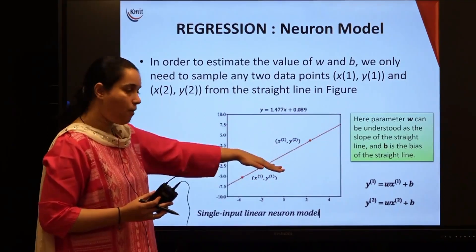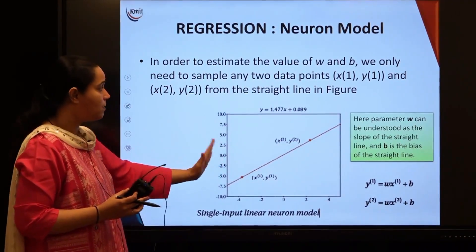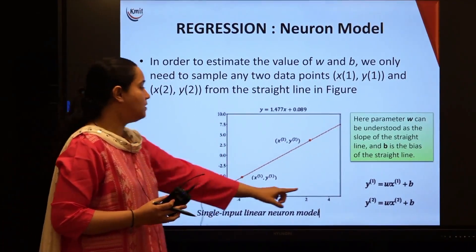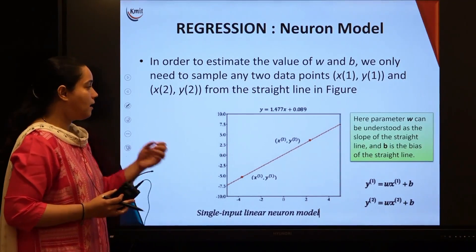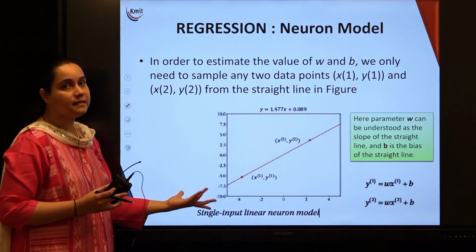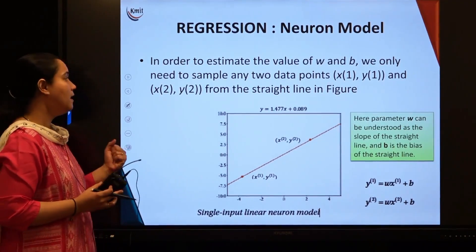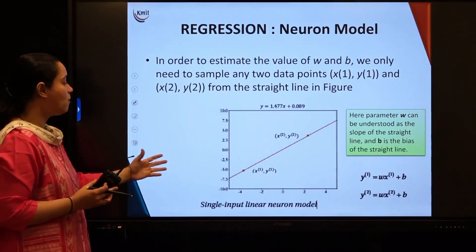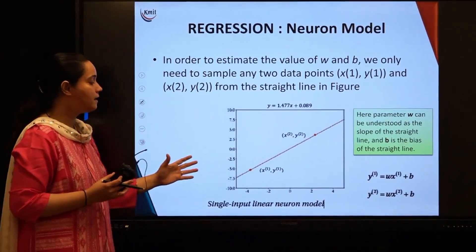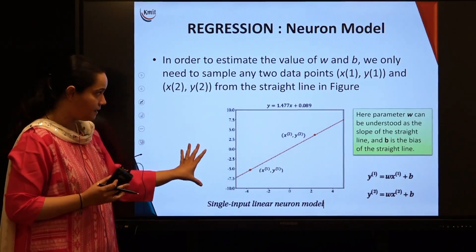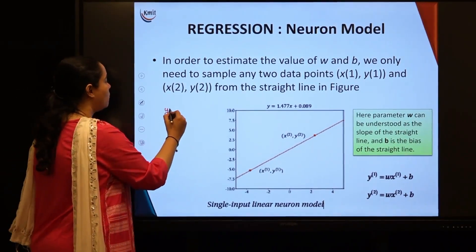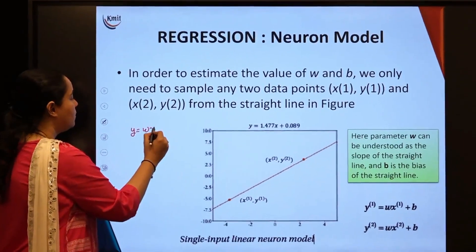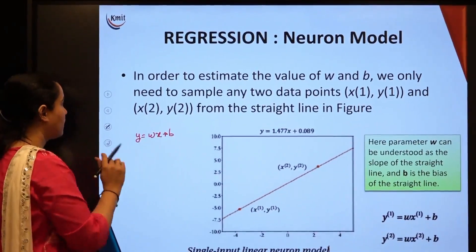The slope of this line, the inclination of this line, is going to be adjusted with the parameter w, and the bias b serves as an intercept of this particular line. You can form a single input linear neuron model if you figure out an equation of y equals wx plus b.